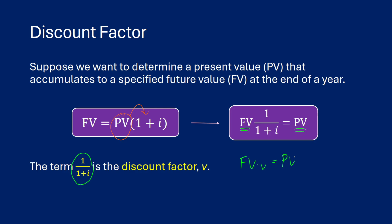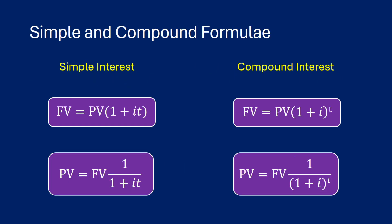Depending on whether we have simple interest or compound interest, we're going to have slightly different formulas. The future value equals the present value times one plus i times t for simple interest, and times one plus i raised to the t for compound interest because it's exponential. If we do some manipulation, we can also get the present value. For simple interest, it's just the future value times one over one plus i times t. For compound interest, the present value equals the future value times one over one plus i raised to the t, which is the same as v to the t — our discount factor.